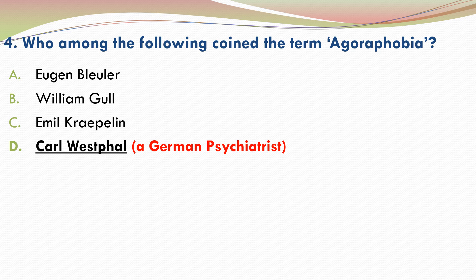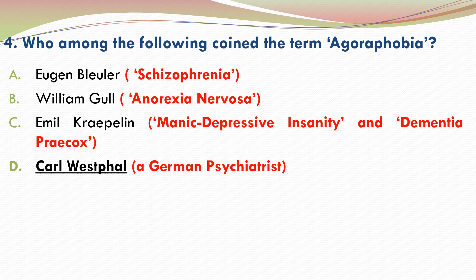The other three have also coined important terms in relation to psychiatry. Eugen Bleuler was a Swiss psychiatrist who coined the term schizophrenia. Sir William Gull was a British physician who introduced the concept of anorexia nervosa. Emil Kraepelin was a German psychiatrist who coined the terms manic depressive insanity and dementia praecox.